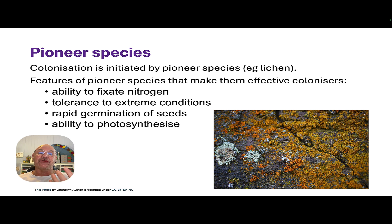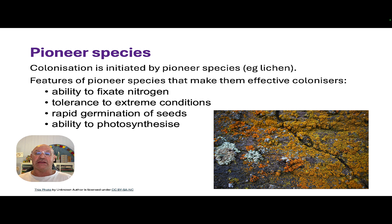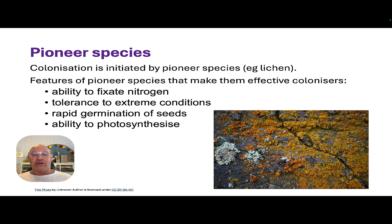For a pioneering species, they need certain characteristics to make them effective colonizers. They need to be able to improve abiotic conditions — fixing nitrogen is really important, taking nitrogen from the air and fixing it as nitrates in the soil. They need to tolerate really extreme abiotic conditions, rapidly germinate, rapidly produce a lot of biomass, and then die out because they get replaced by new species. So r-selected species would be absolutely ideal. They also need to be able to photosynthesize to increase the biomass in the area.